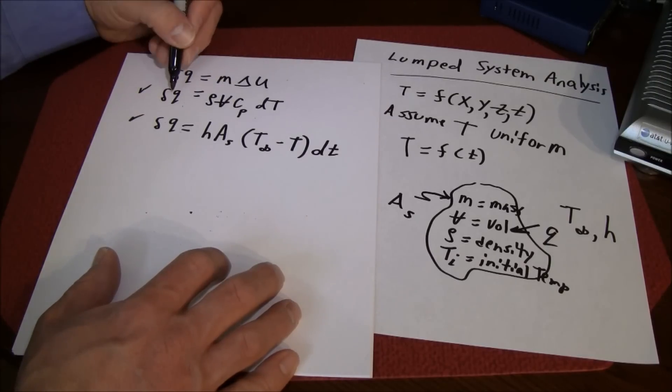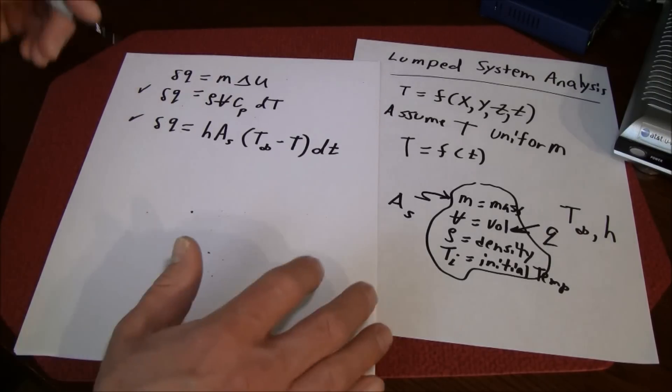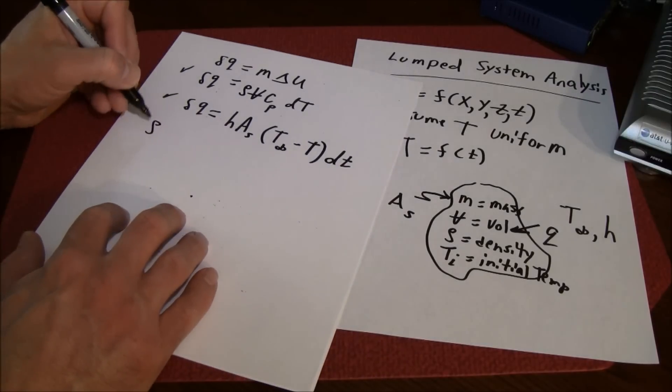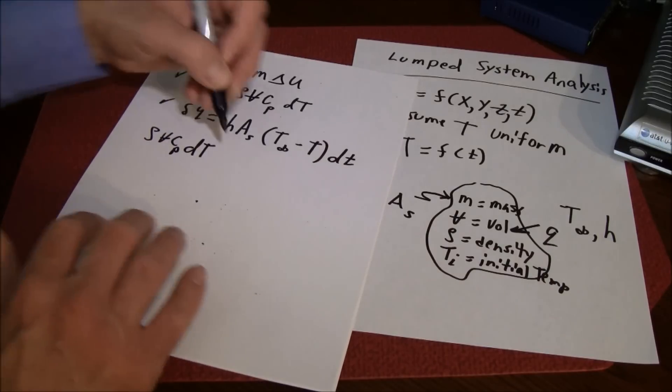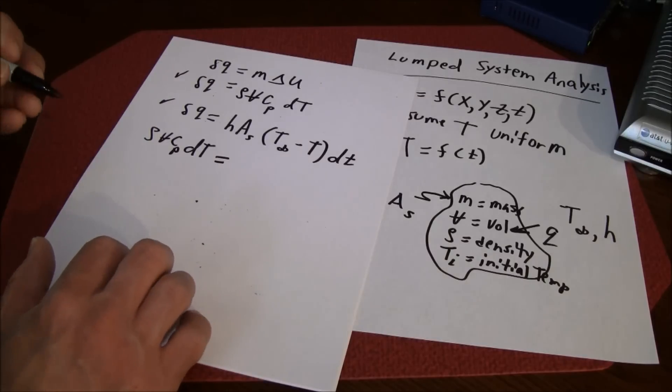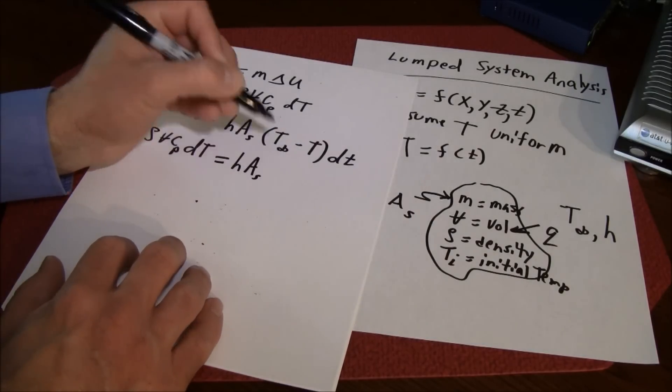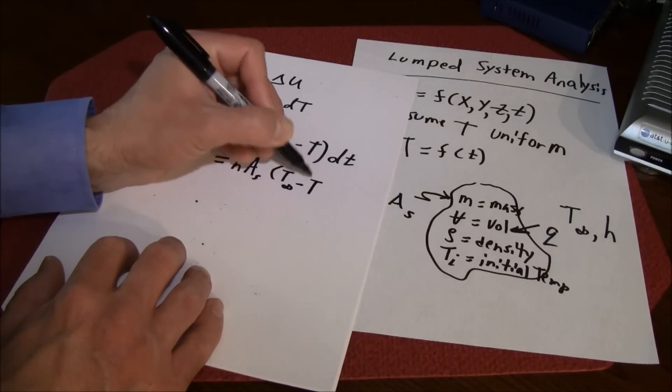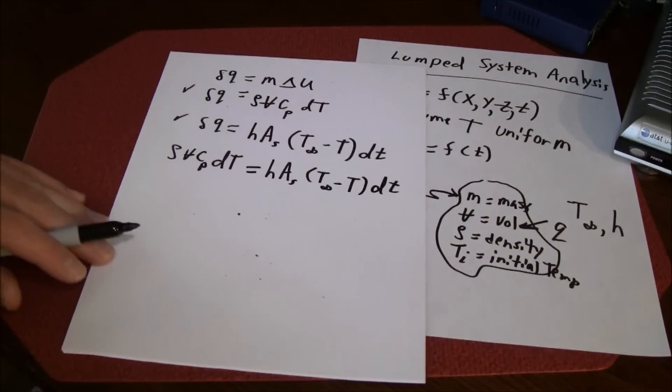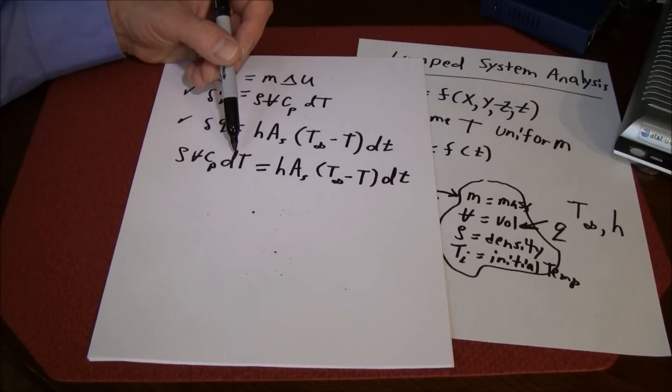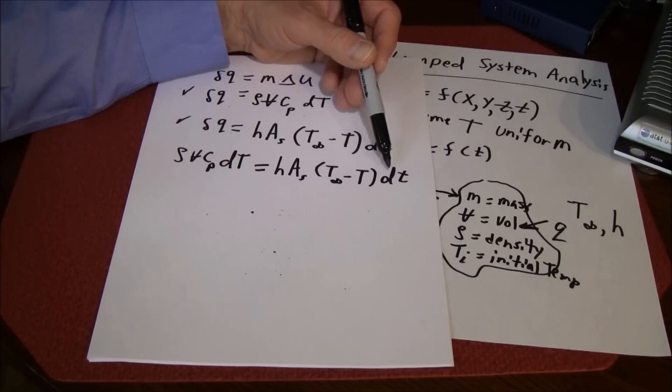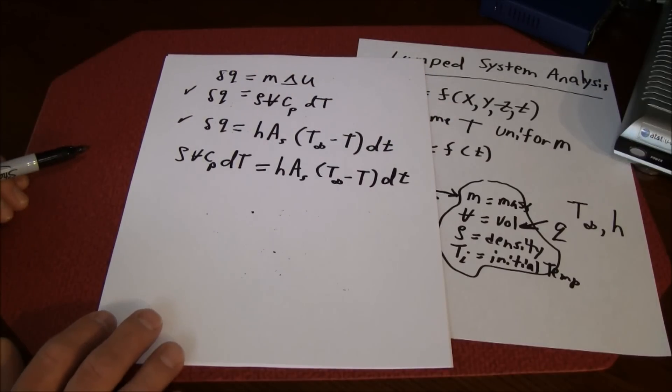If we equate these two delta q's, what we would have is rho volume c sub p times the change in temperature equals h times the surface area times T infinity minus T times delta t. This is a differential equation and we can separate terms and integrate.